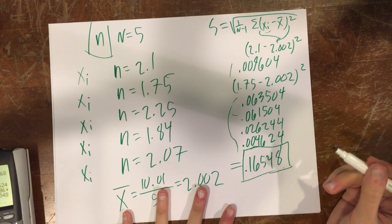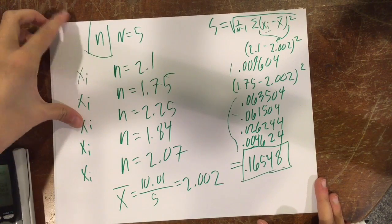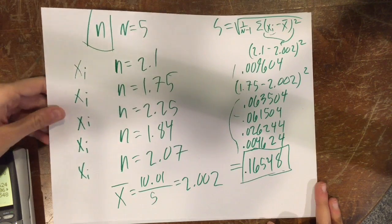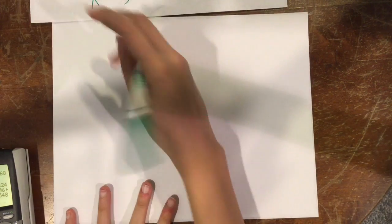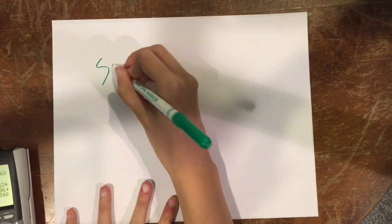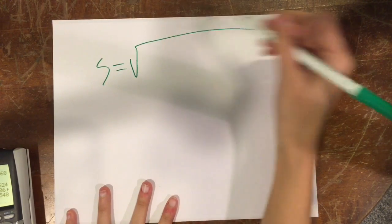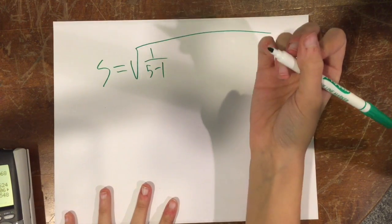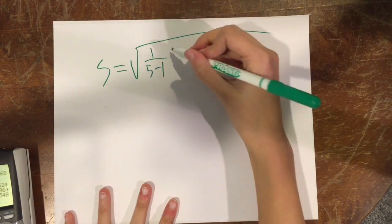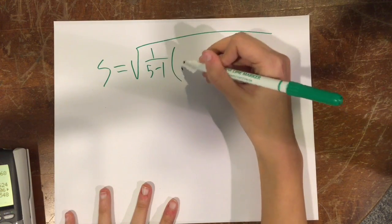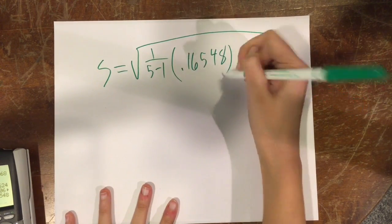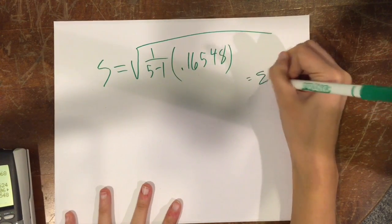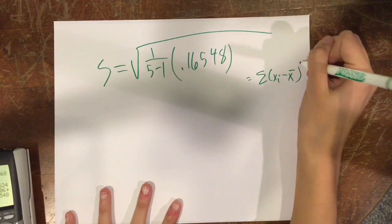So I saved you that time again. This is what they all come out to when you add them up. And you're going to plug that into your equation again. I'm going to get an issue of paper because this is kind of getting messed up. But what it looks like now is S equals the square root of 1 over 5 minus 1, because this number equals sigma of xi minus x-bar squared.